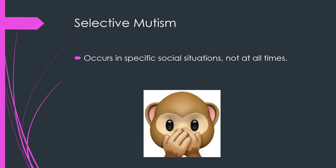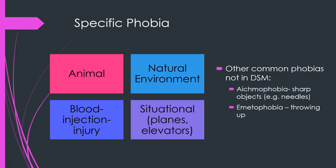Selective mutism involves not speaking in specific social situations but not all the time. Specific phobia has four main types listed in the DSM: animal, natural environment, blood/injection/injury, and situational (like planes or elevators). Some other phobias not listed in the DSM include aichmophobia — fear of sharp objects like needles — and emetophobia — fear of throwing up.